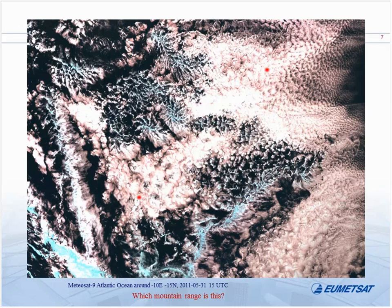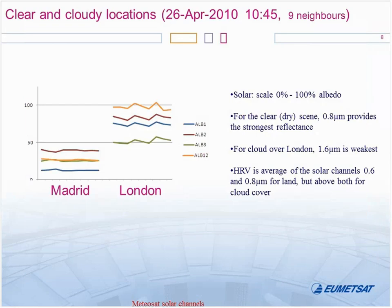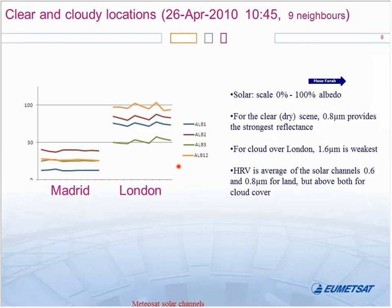Looking at solar channels — the three standard channels in Meteosat: 0.6, 0.8, and 1.6, plus the high resolution visible which has low spectral resolution because it covers a wide range of wavelengths. For a period around 10:45 UTC, this graph shows the evolution in time of albedo values measured for a pixel close to Madrid and a pixel close to London.